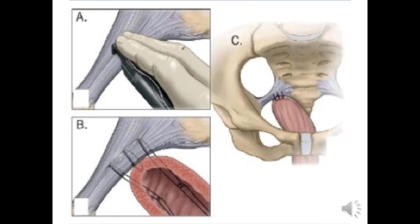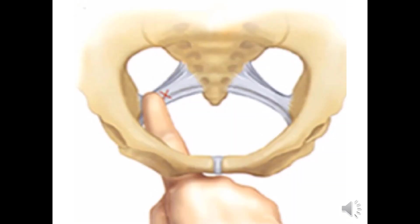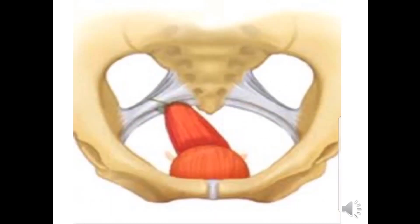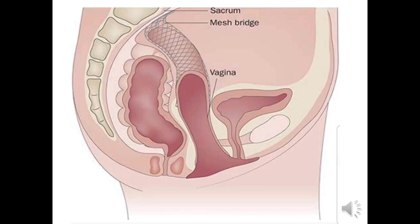Surgical demonstration: the suture is shown attached to the right sacrospinous ligament. The sacrospinous ligament is palpated with a finger, then identified with a sponge. A mesh is shown for vagina-cervix fixation to the sacrum — sacral colpopexy.